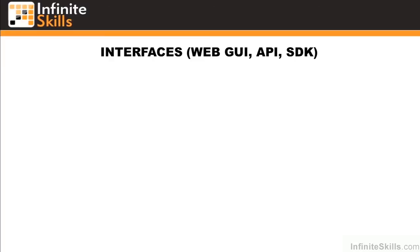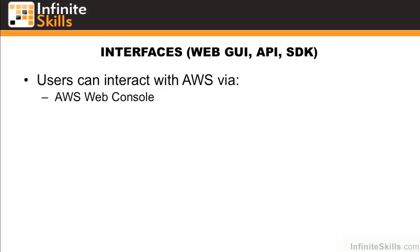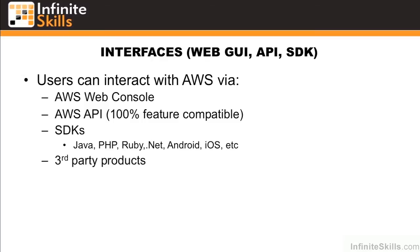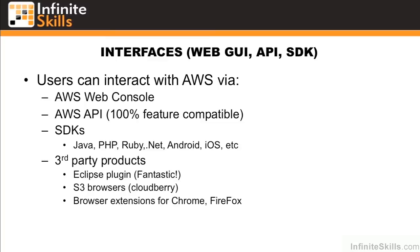In this video, we'll explore the various interfaces available to interact with AWS resources. The first thing users are most familiar with is probably the web console. There's also an AWS API as well as SDKs for programmatic access via most popular languages and platforms. There's also a swath of third-party products, including an Eclipse plugin, S3 browsers such as CloudBerry, browser extensions for Chrome and Firefox, while Elastic and RightScale also offer deeper integrations.